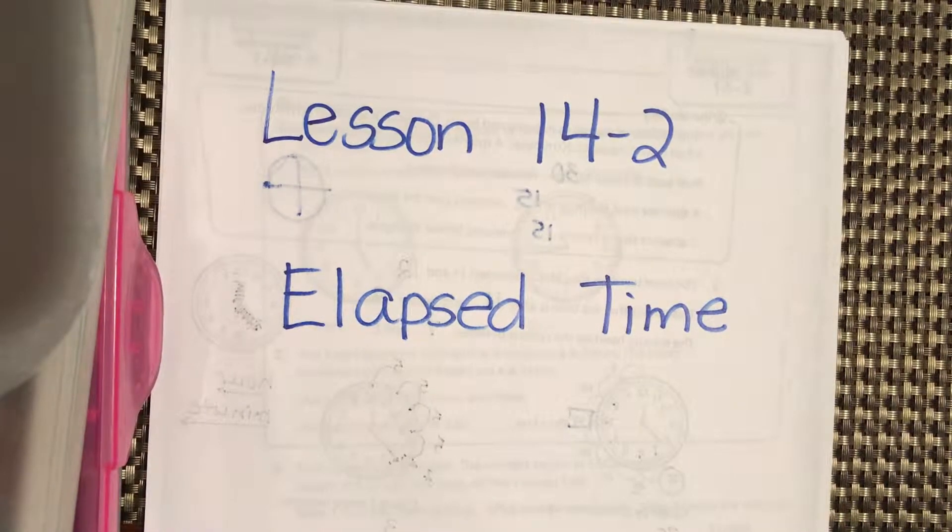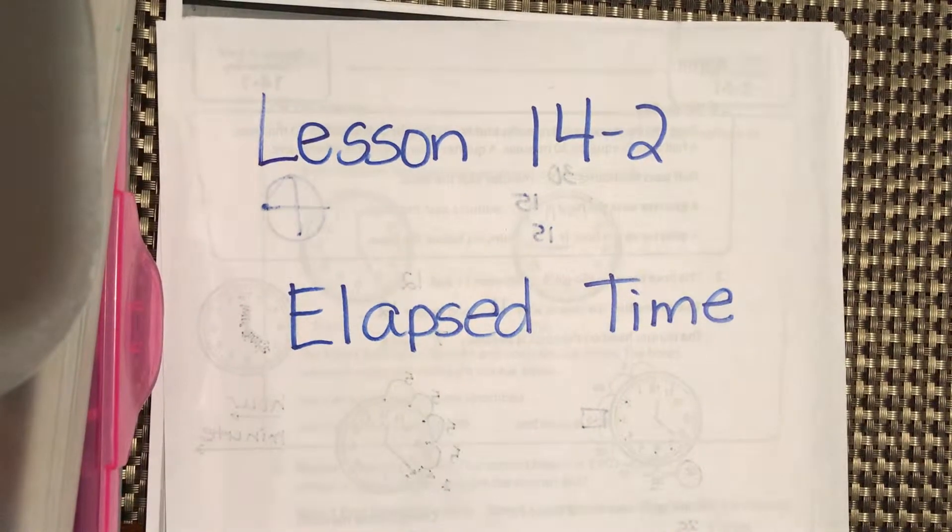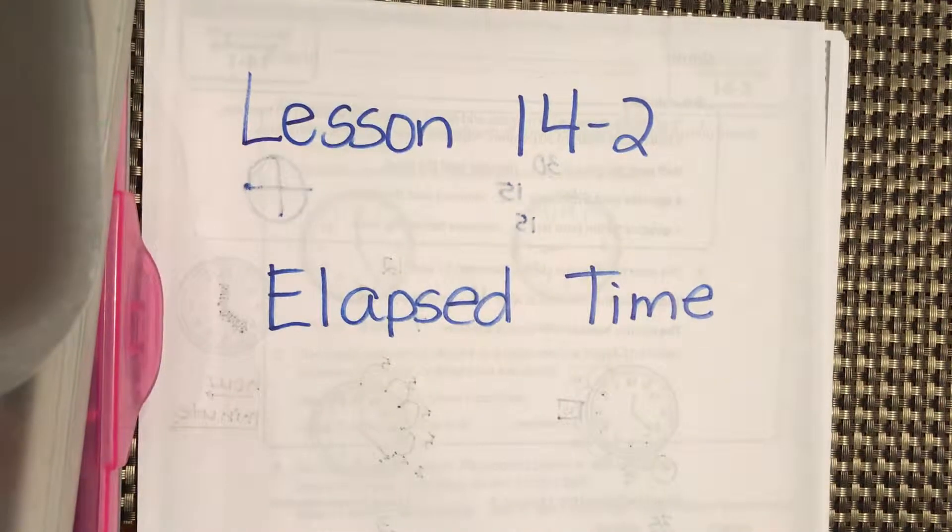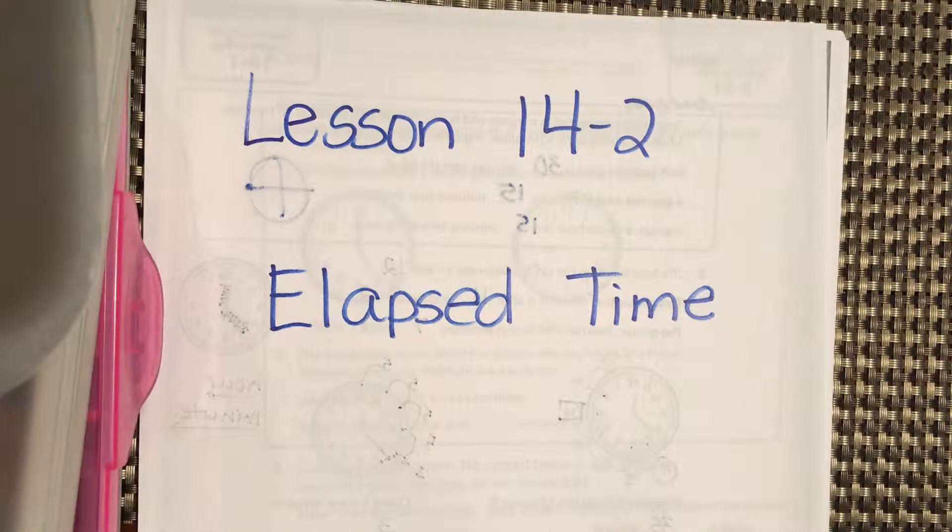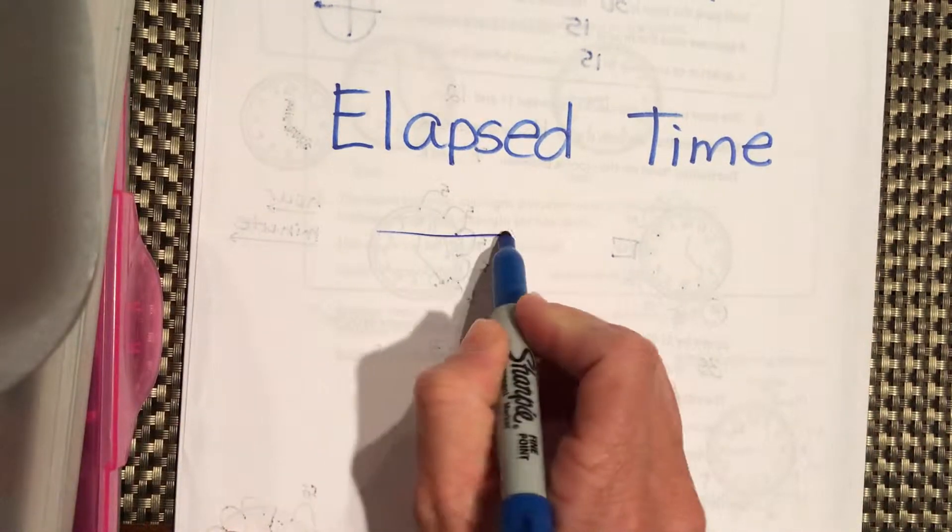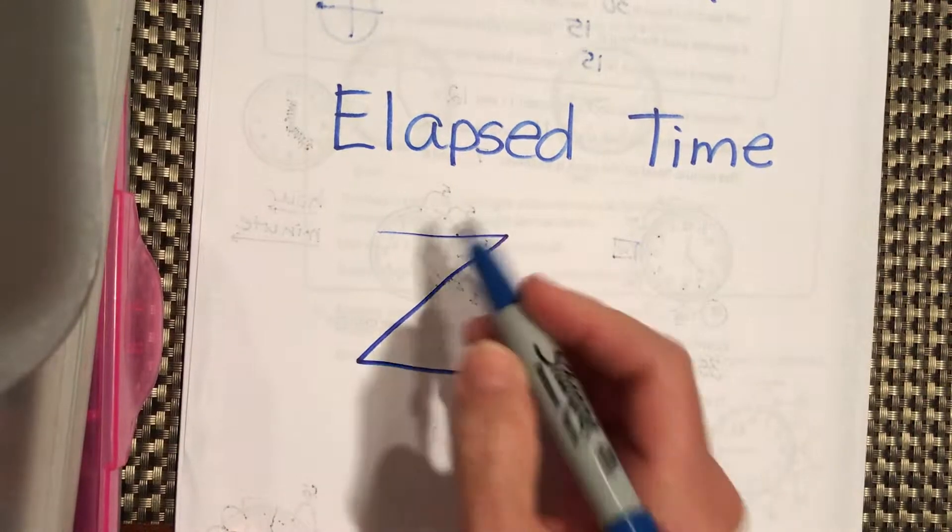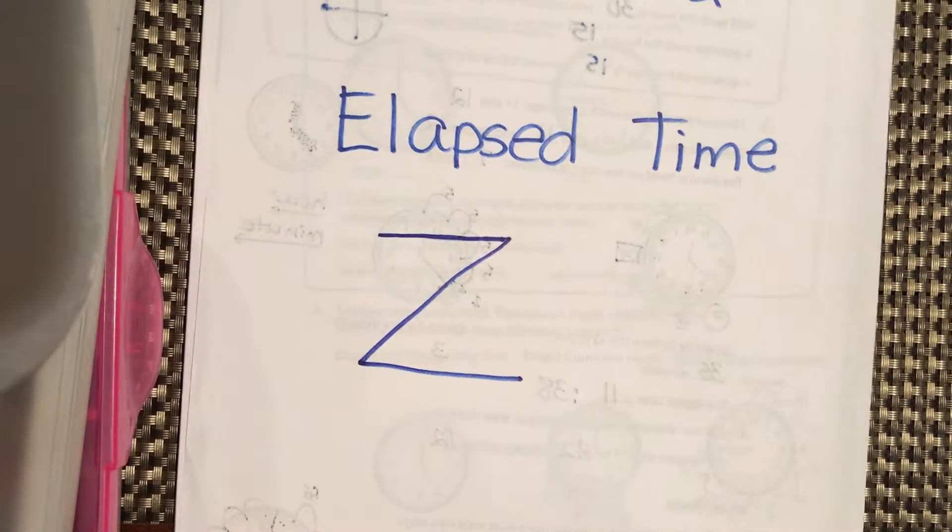Okay, we're going to do Lesson 14-2, Elapsed Time. There's two great ways to do elapsed time in third grade. I'm going to show both of them to you, and you're going to try both and see which one works for you in the end. Sometimes, certain problems, the Z method is going to work better, and other times, the hills, mountains, and rocks are going to work better. So, the Z method is the first one. You can flip your paper over and make a Z on the back.